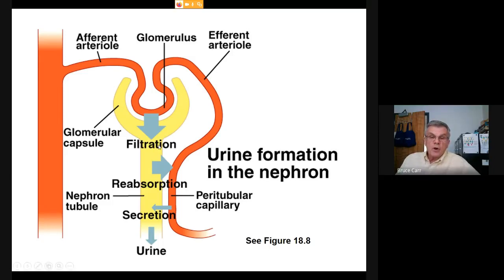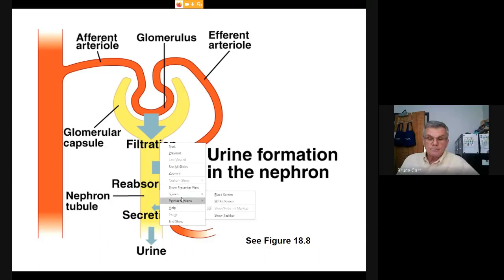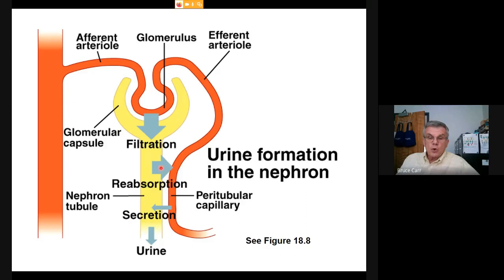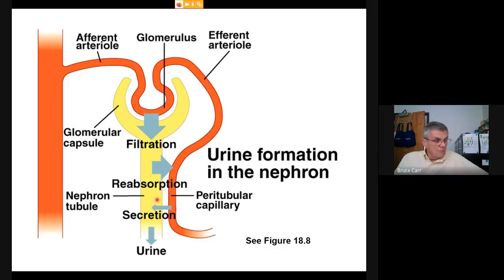It's a three-step process starting in the glomerulus with filtration, then after the glomerulus — in the proximal tubule, the loop of Henle (or nephron loop), the distal convoluted tubule, and the collecting duct — we have reabsorption and secretion. Reabsorption is the movement of valuable materials like glucose, ions, or hormones from the filtrate back into the bloodstream. Secretion is the reverse — moving waste materials, such as hydrogen ion, back into the urine.